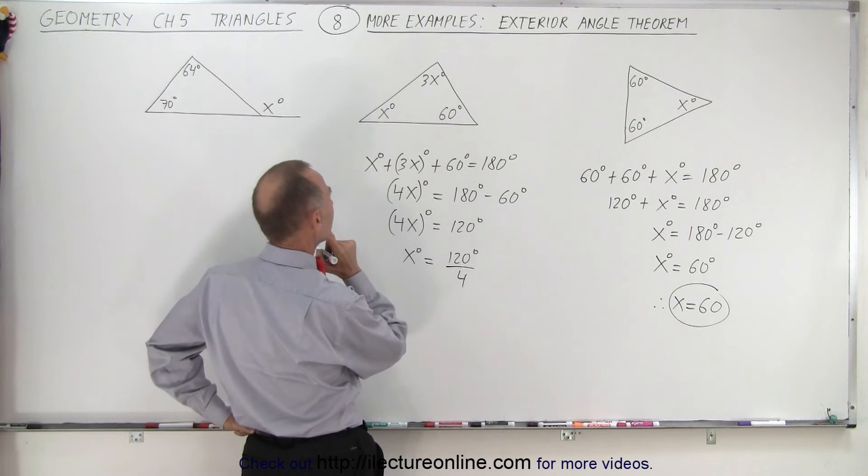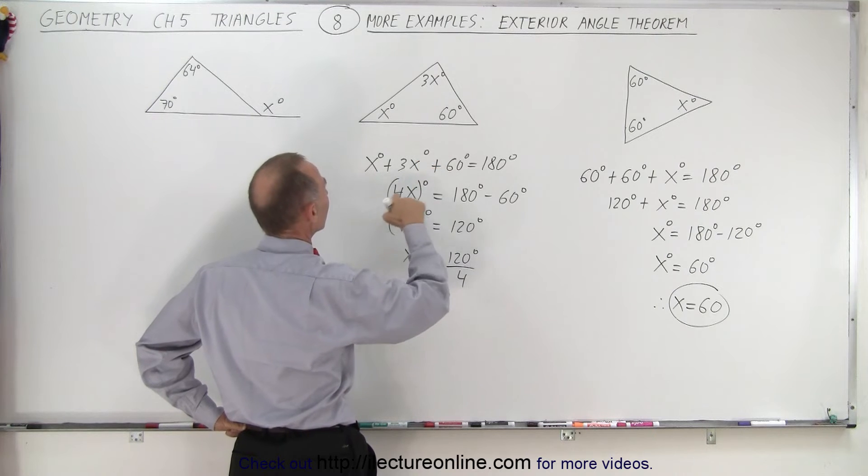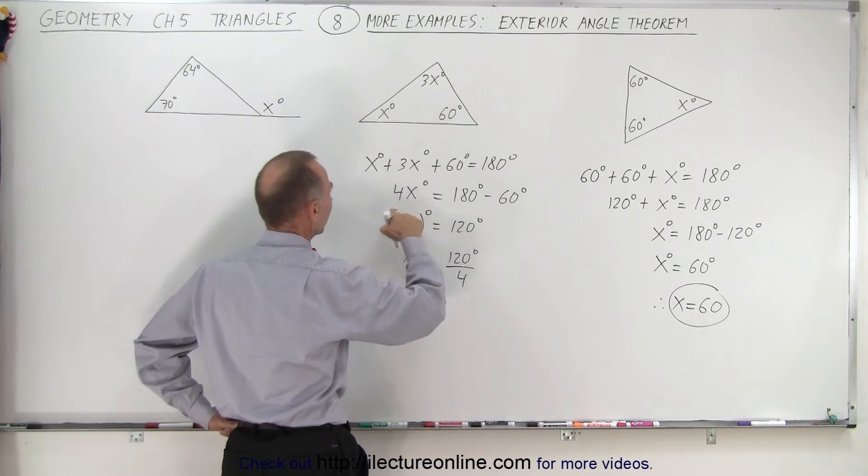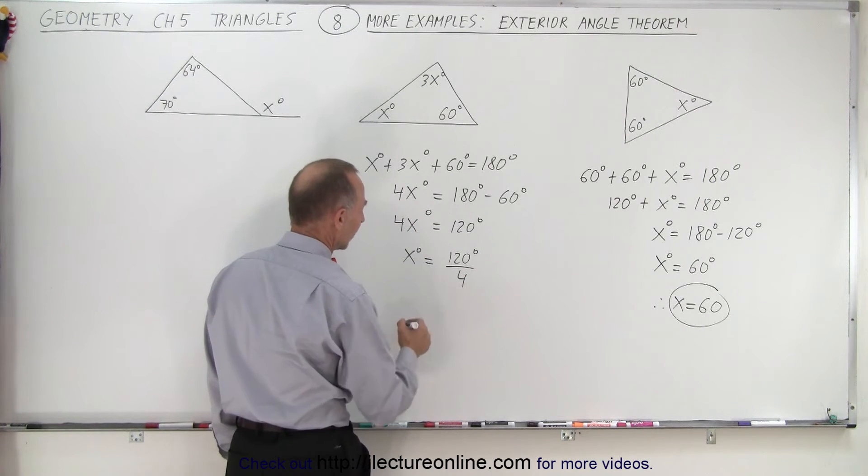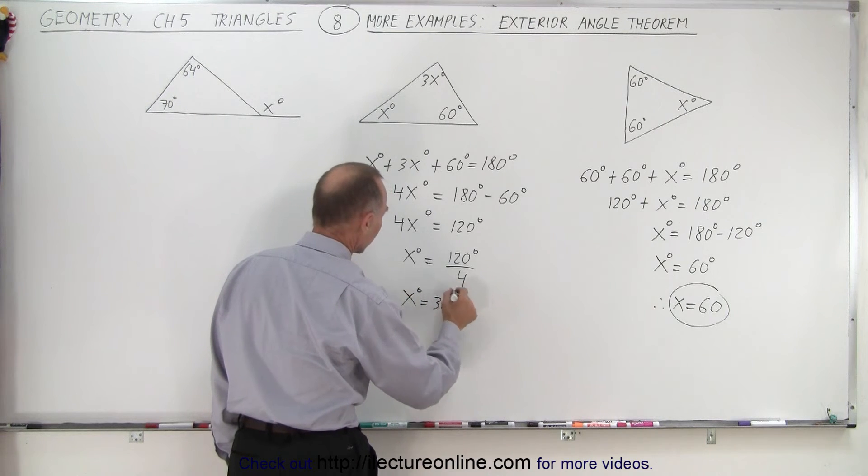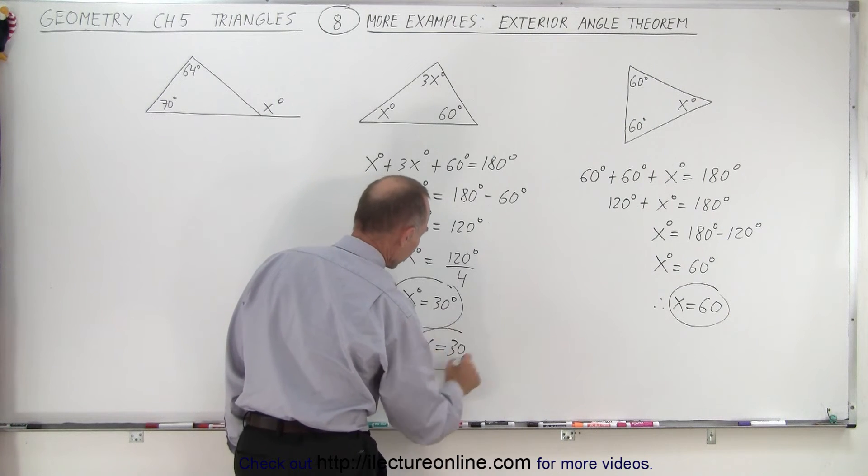So now we can say that x degrees equals 120 degrees divided by 4. And in that case, you know what, maybe I don't need the parentheses. Does that make sense? I guess we can do it like that. We don't need the parentheses. That might even be better. And then we simply divide both sides by 4, and we get x degrees is equal to 30 degrees. So here you can see that x equals 30.